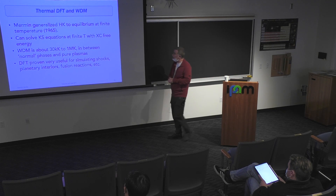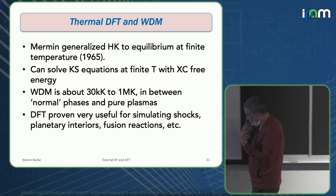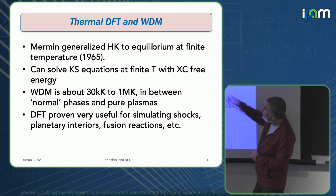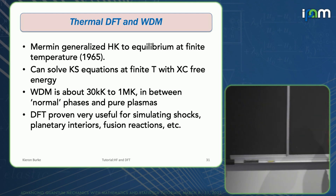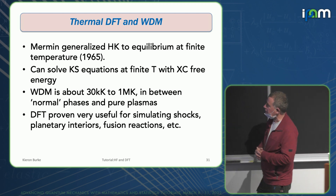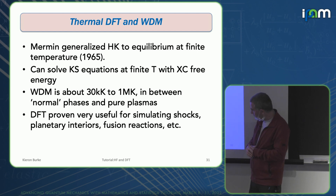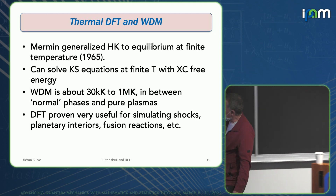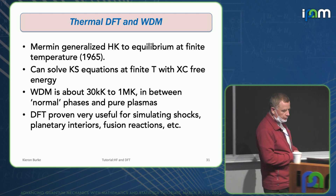Thermal DFT in warm dense matter — the theorems generalize to the equilibrium of electrons at a finite temperature. It's turned out to be very useful for systems that were normally treated as classical plasmas, where Kohn-Sham DFT has sort of revolutionized this over the last 15 years. On the other hand, once you get too hot, you can no longer converge your Kohn-Sham calculations, and then you have to go to an orbital-free version.